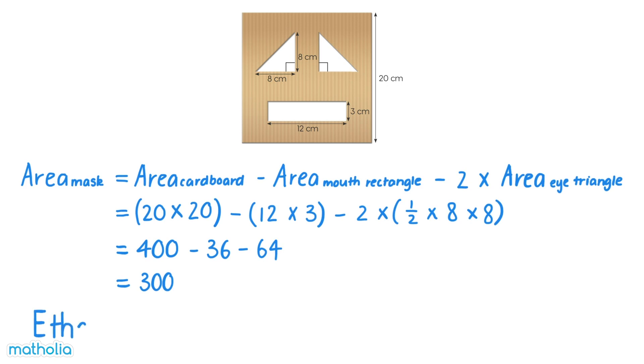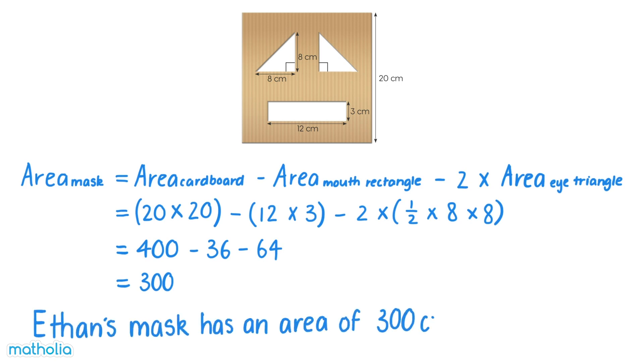So, Ethan's mask has an area of 300 square centimetres.